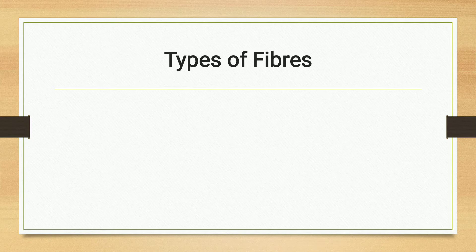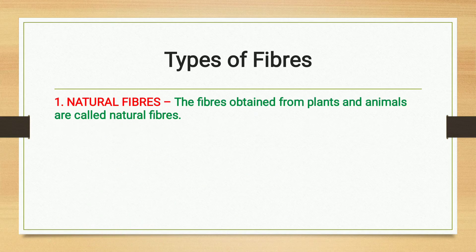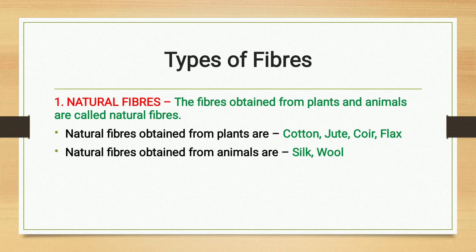Types of fibers. First, natural fibers. The fibers obtained from plants and animals are called natural fibers. Examples of natural fibers obtained from plants are cotton, jute, coir, and flax.